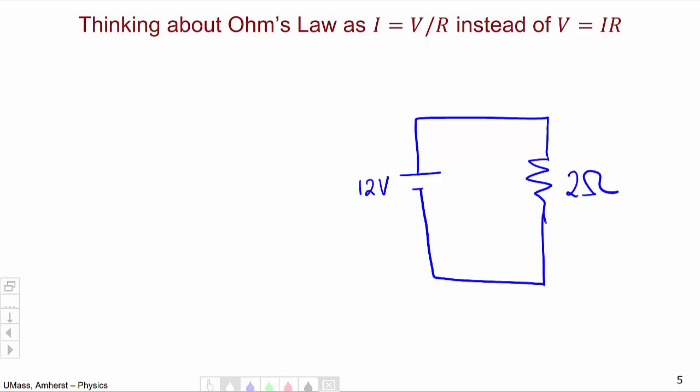How much current runs through the circuit which we measure with this ammeter? Well the current is going to run from high potential to low potential so it's going to go this way around the circuit because remember the long bar of the battery represents high potential.